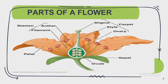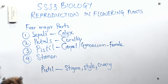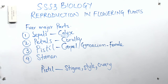This pistil consists of three major parts: the stigma, the style, and the ovary. Looking at the image on our screen, you'll see the carpel. The apex part of the pistil or carpel is the stigma. Then you have the style, which is a slender tube connecting the stigma to the ovary. The swollen basal part down there is the ovary.